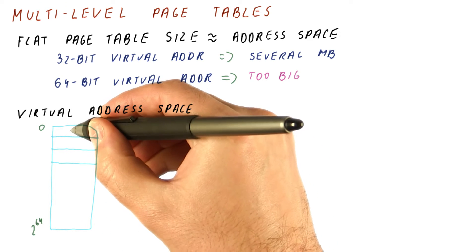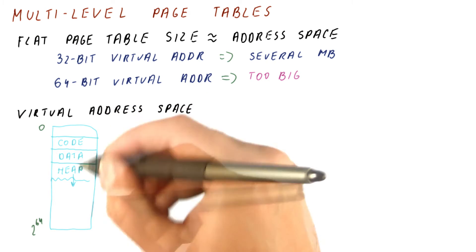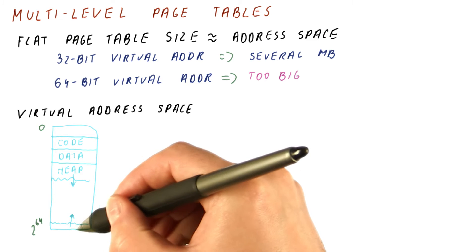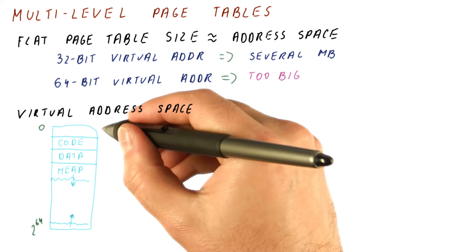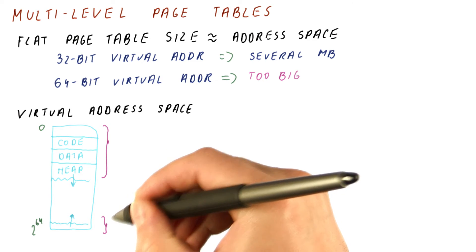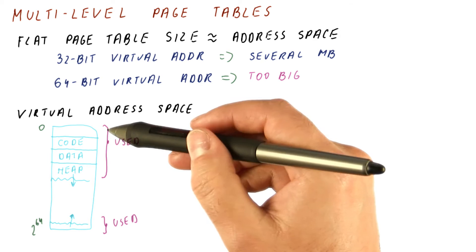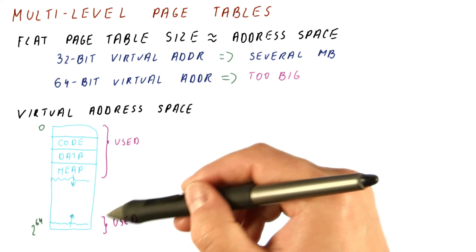At the beginning of the virtual memory, there is the code, the static variables, and the heap, and at the top of the virtual address space is the stack. So we're really talking about two contiguous regions of virtual memory that are actually used by the application. And even if these two are several gigabytes each.